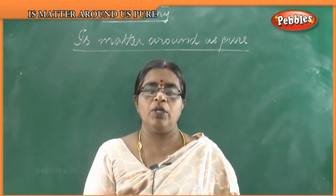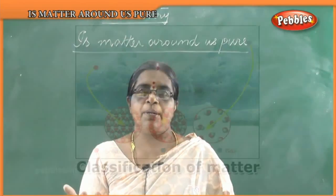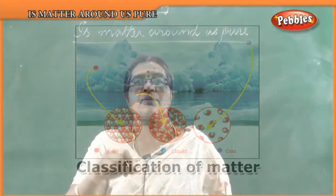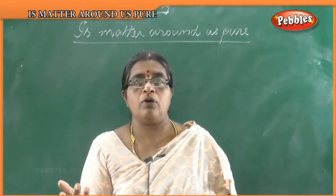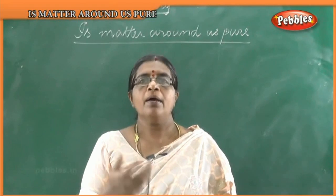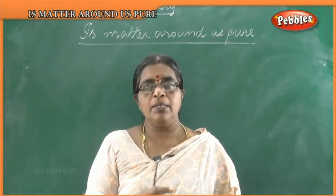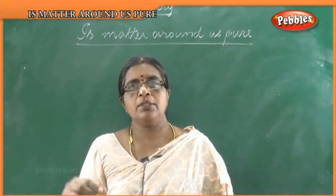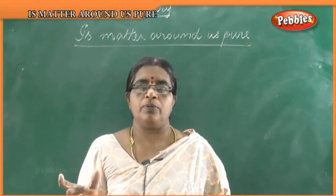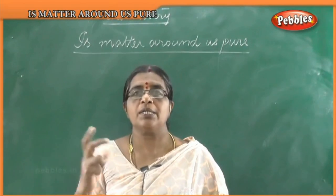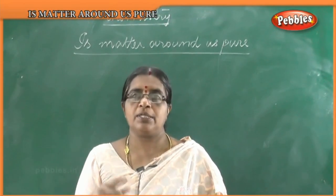The physical states are: solid state, liquid state, and gaseous state. Now what is a solid state? When you see a stone, it is having a definite shape — a particular shape. You cannot compress it. It is having a definite melting point. It is not compressible. These are all the main properties of solid substances.